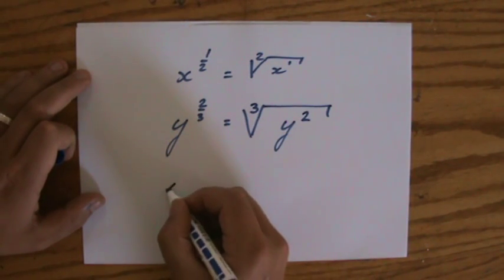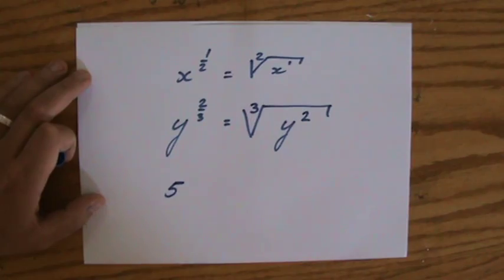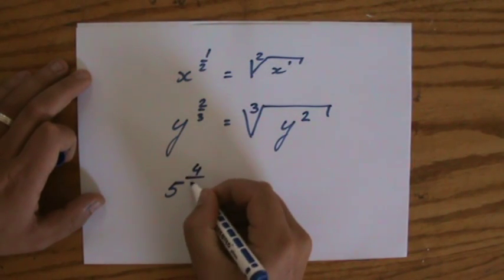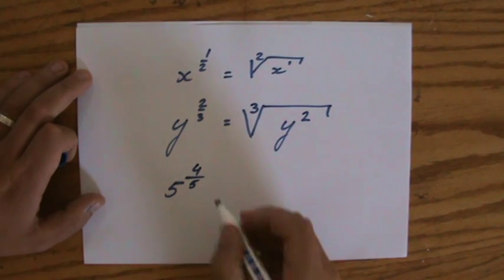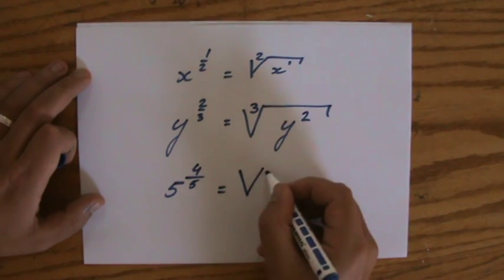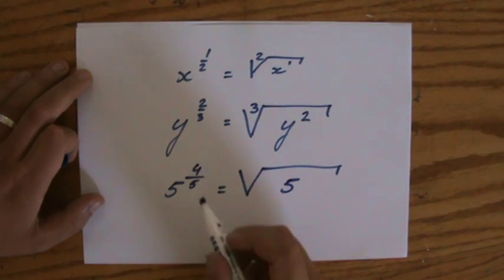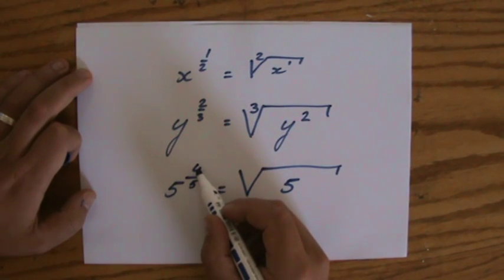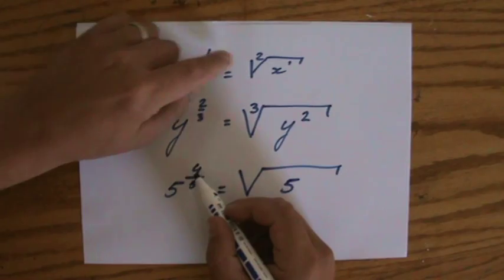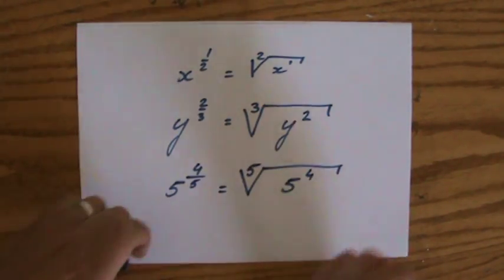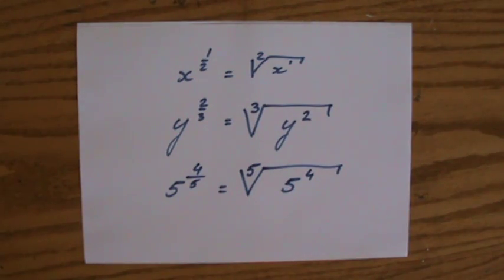For instance, 5 to the power of 4 over 5. That would be, let me draw this root sign, 5. Where does the numerator go? 4. That is 5 to the power of 4. Where does the denominator go? That is the fifth root of 5 to the power of 4.